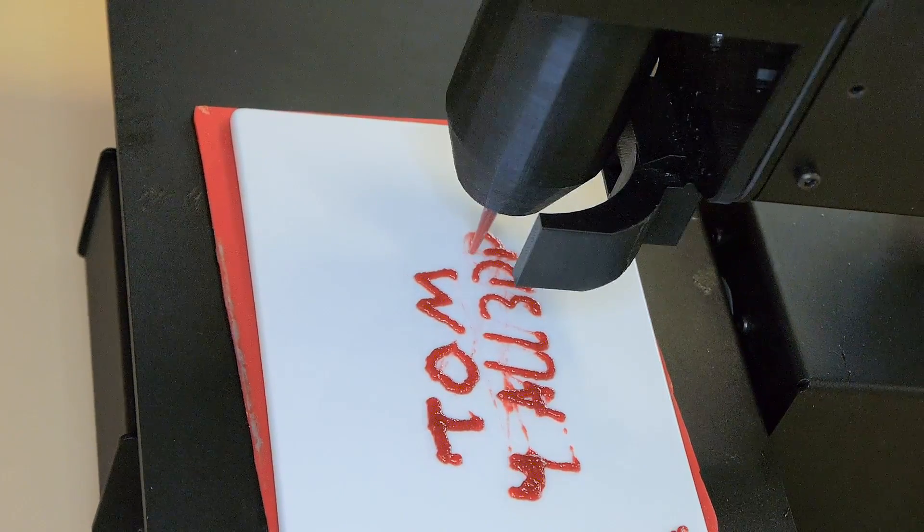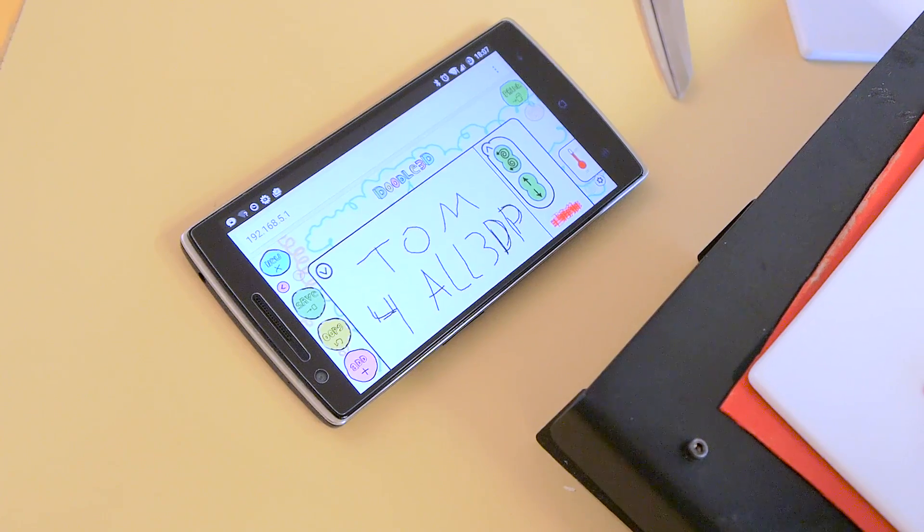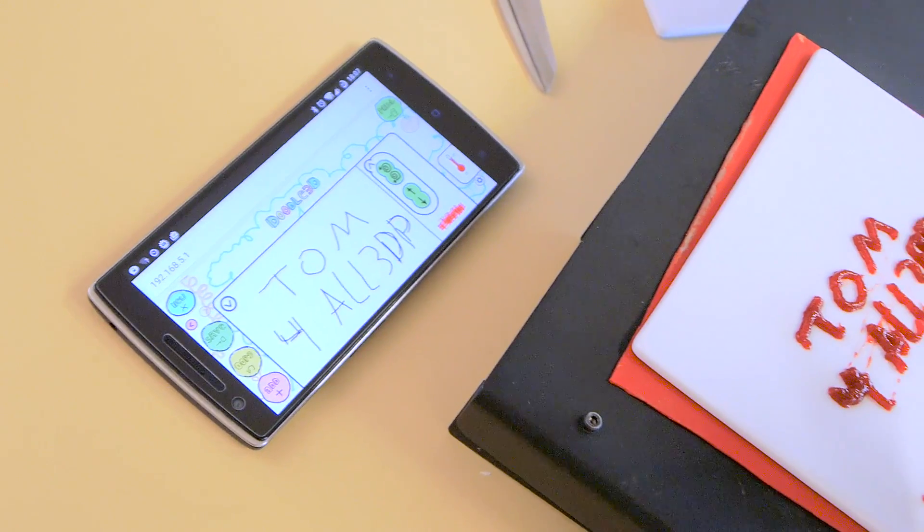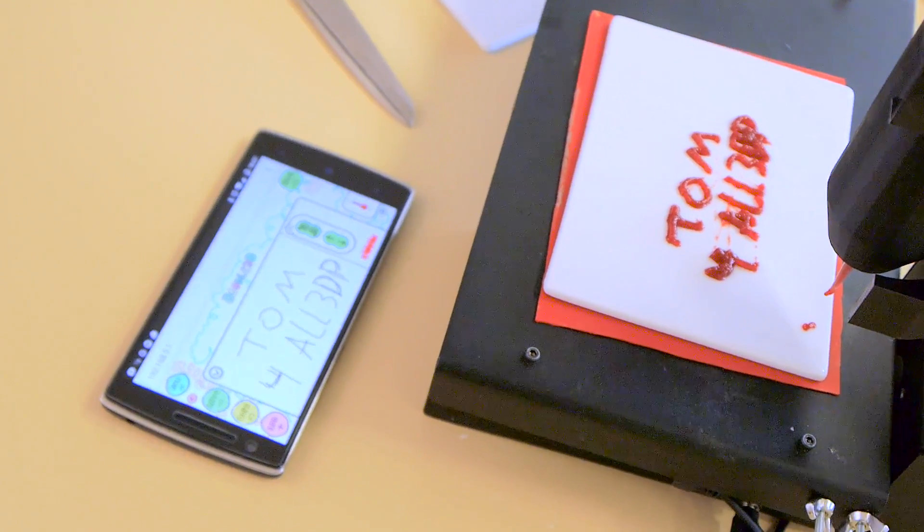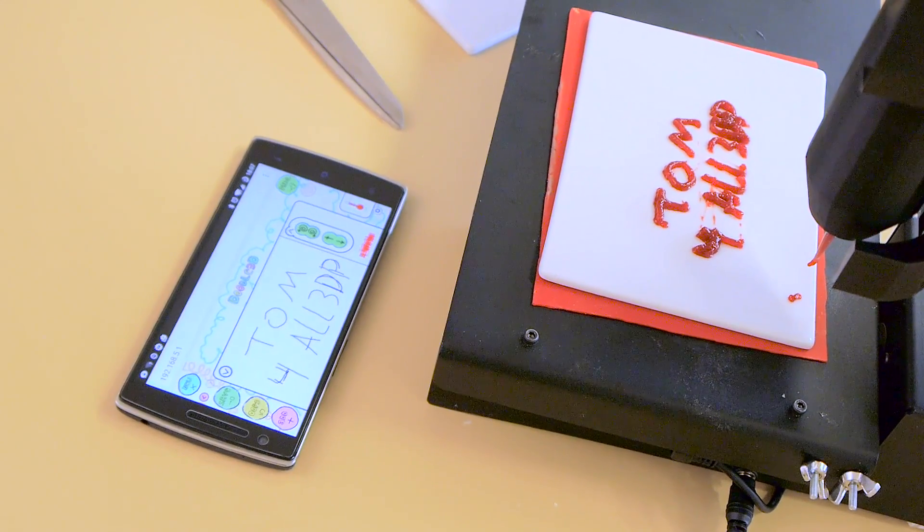We offer the STL files for download. So you can scroll through our Bocasini.com page and have a look which recipes you like. And then you can get the recipes, you can get the cartridges, and you can download the STL file which is optimized for the food you want to print.